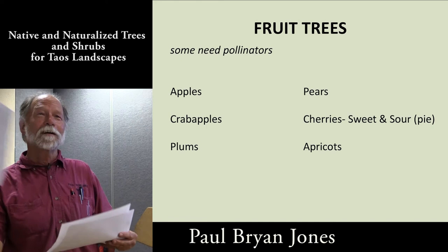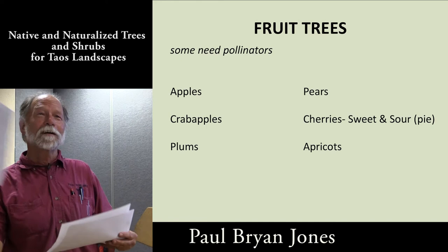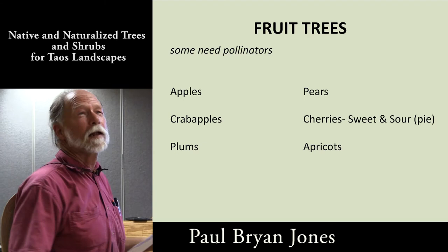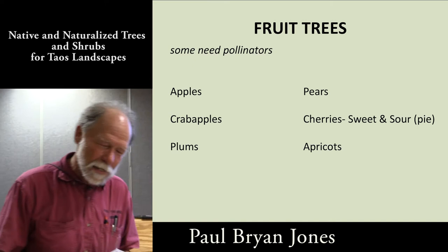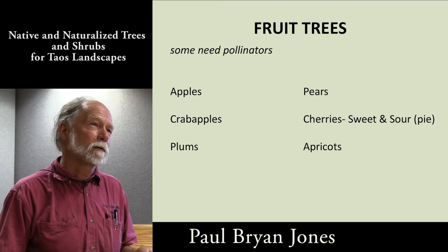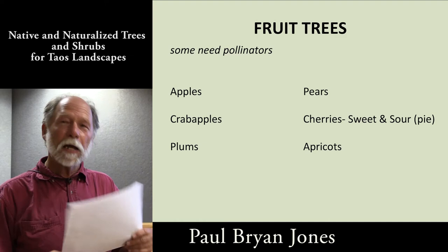Fruit trees — the self-pollinating ones are apricots, nectarines, peaches, and sour cherries; they don't need a pollinator. The ones that need pollinators are apples, pears, plums, and sweet cherries. They have to have a tree of a different variety of the same fruit — so an apple needs a different apple variety as a pollinator.